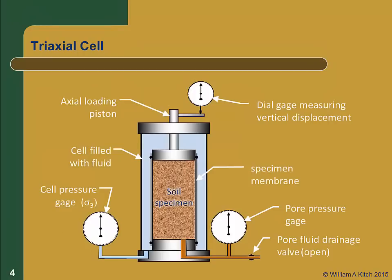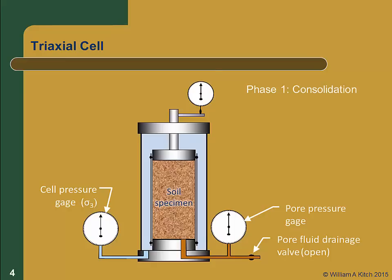There are two distinct phases in any triaxial test. The first phase is the consolidation phase, during which cell pressure is increased. This provides a uniform confining stress all around the specimen, equal to the minor principal stress sigma 3. During this phase, the soil may be allowed to consolidate or not, depending on the type of test being performed.